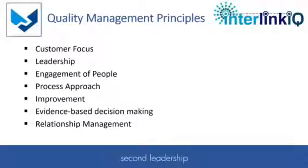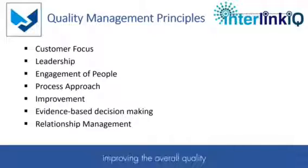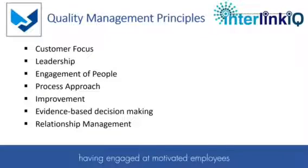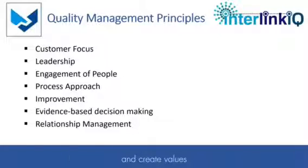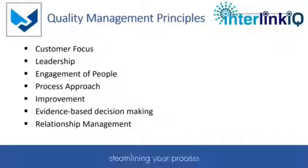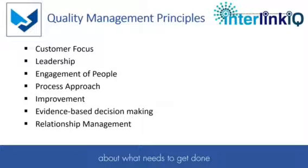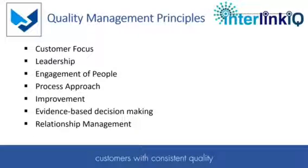Second, leadership. Create leaders that will help your work towards the same quality goals, improving the overall quality level of your organization. Third, people engagement. Having engaged and motivated employees and supply chain partners is the key to execute on your quality objectives and create values. Fourth, process approach. Streamlining your processes and ensuring everyone is on the same page about what needs to get done helps your businesses provide customers with consistent quality.